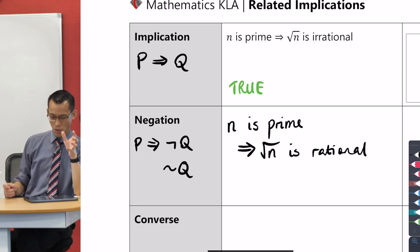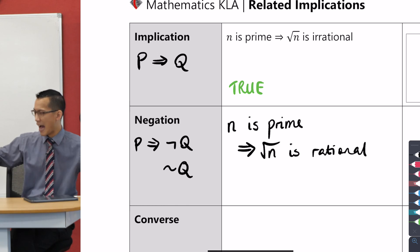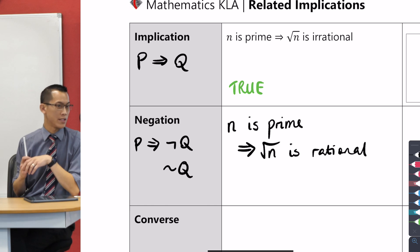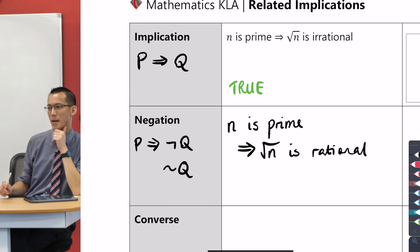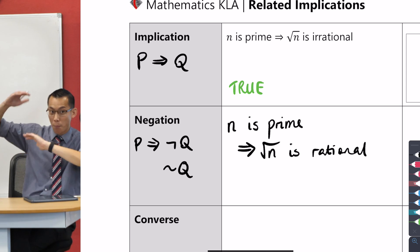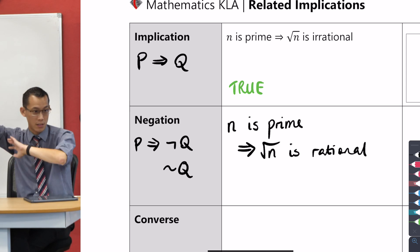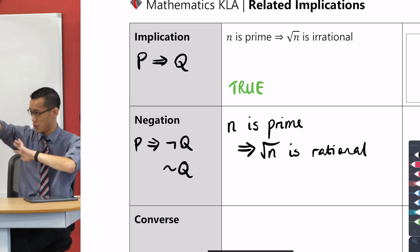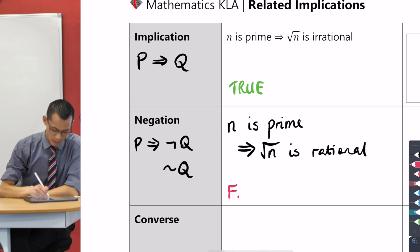Okay so let's quickly make a statement about whether this is true or not. We know that if n is prime, not that we've proved it but we are happy to be convinced by it, that it implies that the square root of n is irrational. So what does that tell you about the negation? Is it true or false? It has to be false. The whole point of them being opposite is that if one's true the other's false, if one's false the other's true. So let's just jot that down. This is false.